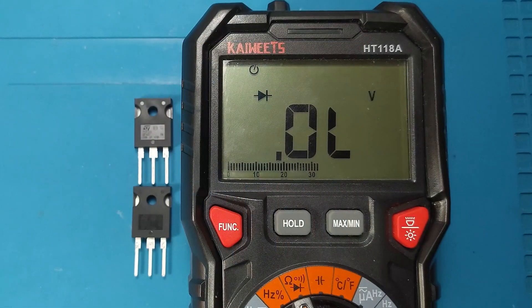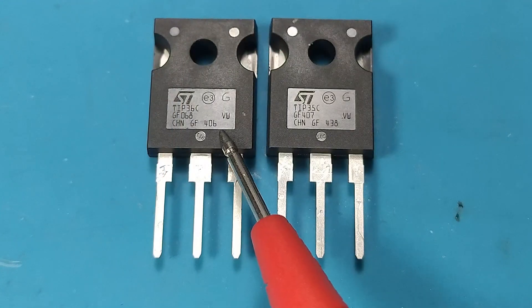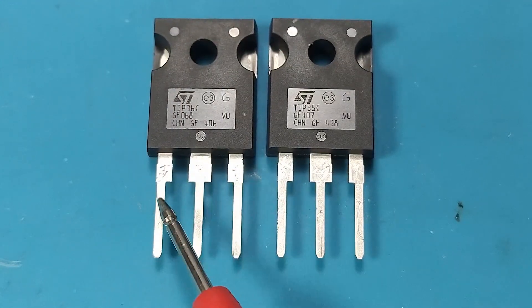Before moving on to measuring them with the multimeter, we must know that the bipolar transistor is a semiconductor with three terminals called base, emitter, and collector.